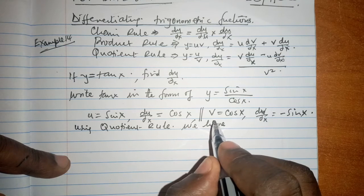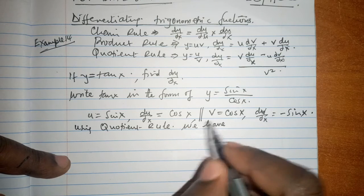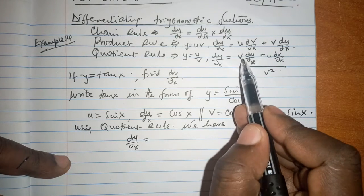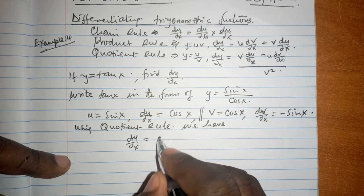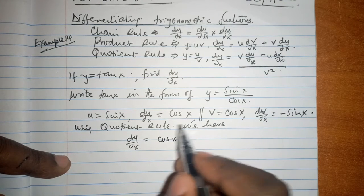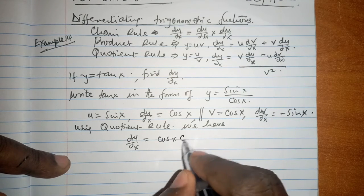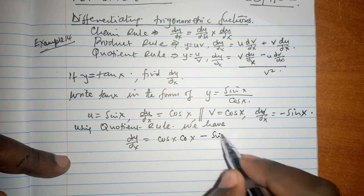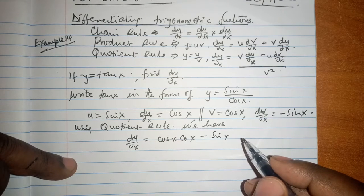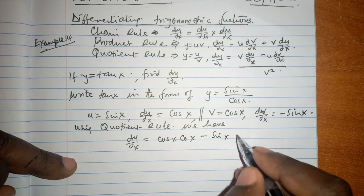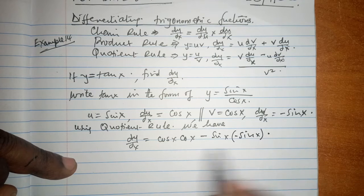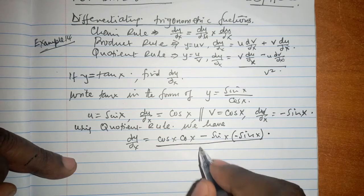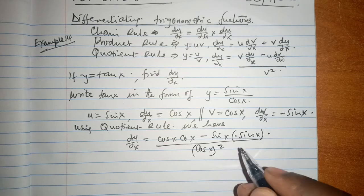What is our v? Our v is the cosine of x. dy/dx is v times du/dx, v is the cosine of x, du/dx is the cosine of x, minus u which is the sine of x, dv/dx minus the sine of x, everything over the denominator squared which is the cosine of x squared.